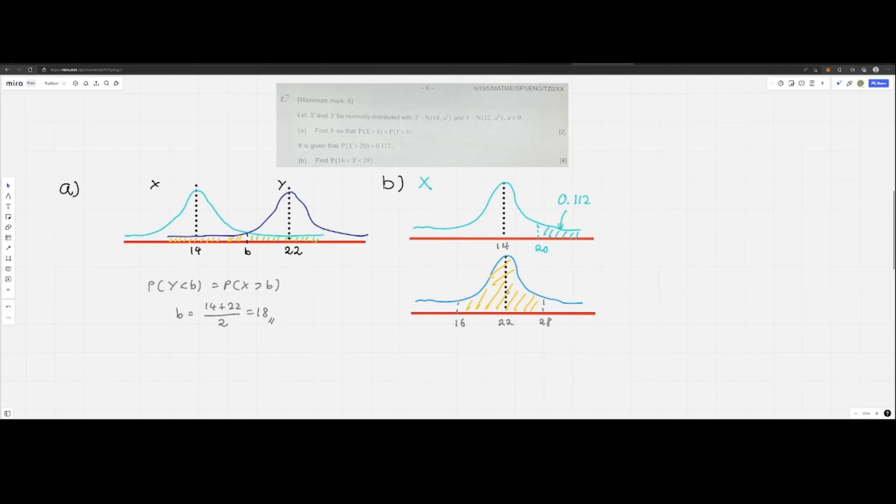The first thing to note is that the distance from 14 to 20 is 6, similar to the distance from 22 to 28, which is 6, and similarly, 16 to 22 is also 6. This gives us a valid comparison between distributions X and Y.